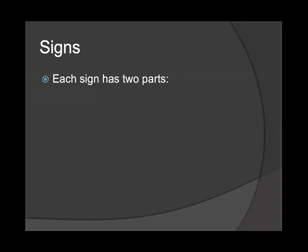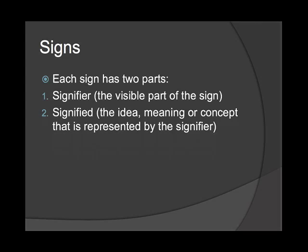Signs. Moving on to more work on the signs in a text. Each sign has two parts: the signifier — the visible part of the sign, the thing we can see — and the signified — the idea, meaning, or concept that is represented by the signifier. We will do examples of these in class, so I just want you to know the terminology so you won't be shocked when we cover it.